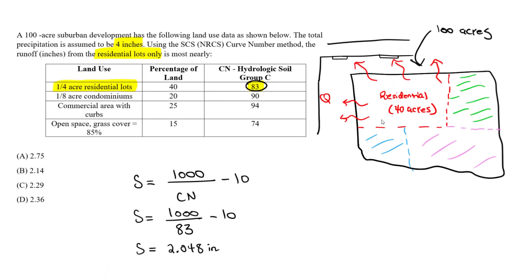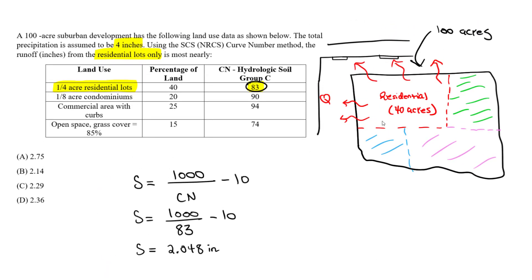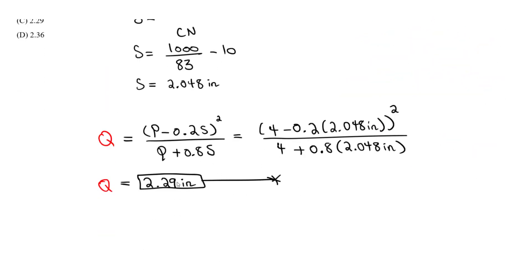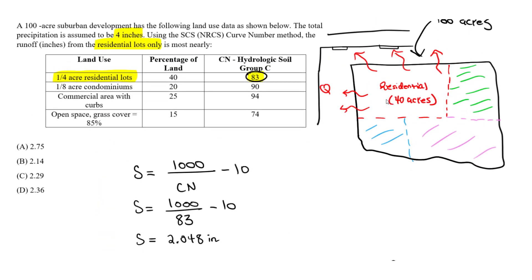That's the runoff. So if you choose to, I recommend you do this just to practice. Do this for the 1/8 acre condominiums, 20% of the land, then we have commercial area which is 25%. And you're given all the curve numbers for this specific soil group, group C. So you could solve for Q for those, but this question asks us specifically for the residential lots.